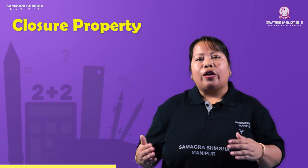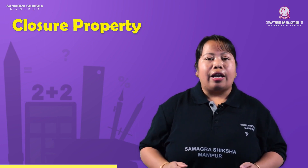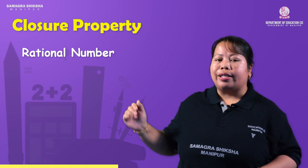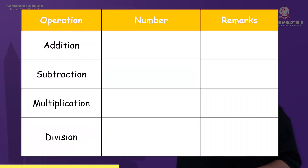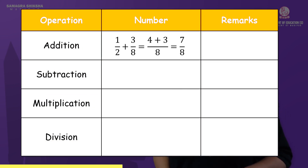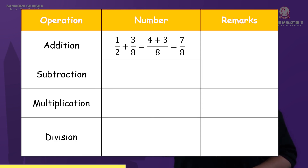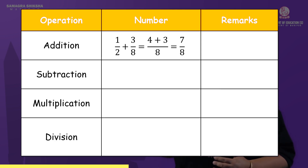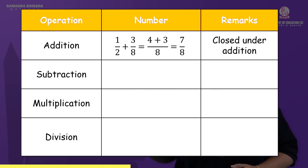Next we have the whole number, closure properties, and integer. Now let's come to the rational number. The first table has columns: operation, numbers, and remarks — with addition, subtraction, multiplication, and division. For addition: 1 by 2 is a rational number because it is in the form p by q, with numerator and denominator. 1 by 2 plus 3 by 8 equals 7 by 8. Both 1 by 2 and 3 by 8 are rational numbers, and 7 by 8 is also a rational number. So it is closed under addition.